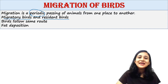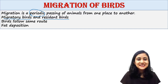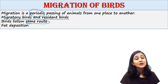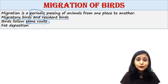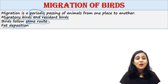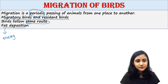Migration occurs during a particular period of the year and birds usually follow the same route. As long-distance migrants, birds fly for several hours without food. Fat deposition takes place in them just prior to migration, because fat produces energy during flight.